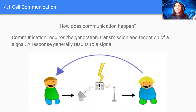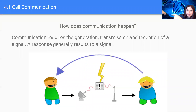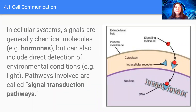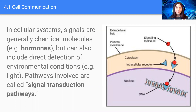So how does this communication really happen? Well, communication requires the generation, the transmission, and the reception of a signal, and eventually a response will occur as a result of that signal being sent. In cellular systems, signals are generally chemical molecules such as hormones, but they can also include direct detection of environmental conditions such as light, or bacteria that can sense when other bacteria are close by.